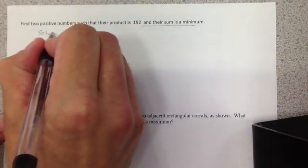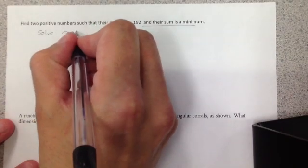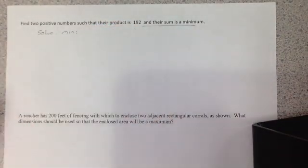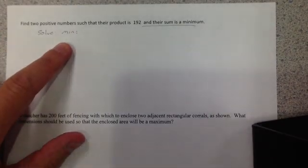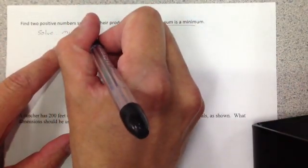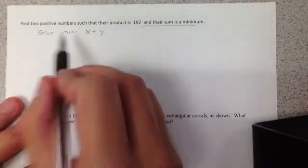So I write that down first. I'm trying to find a minimum value. I need the sum of two numbers. Since I don't know what the numbers are, I just make them up, x plus y. The sum here is going to be a minimum. If I had x plus y, I get a minimum value.